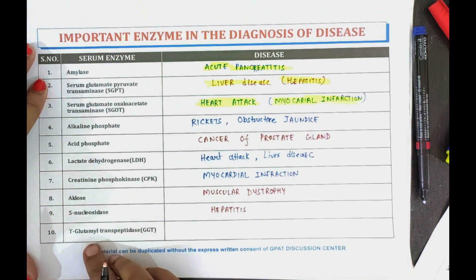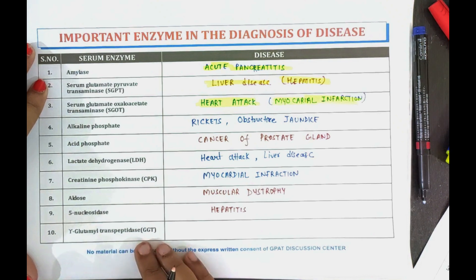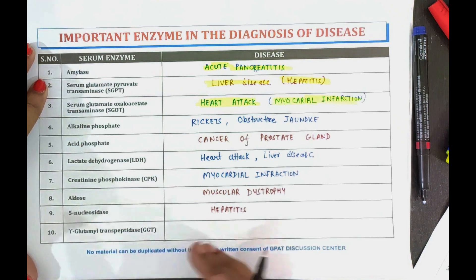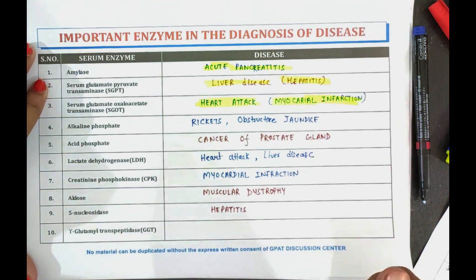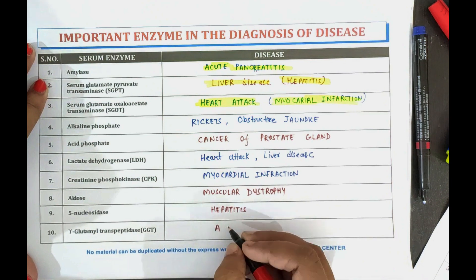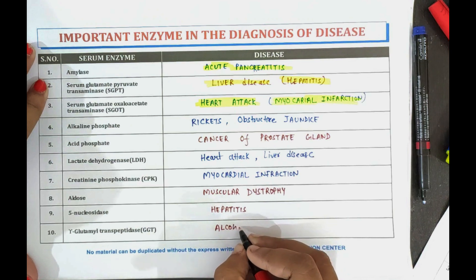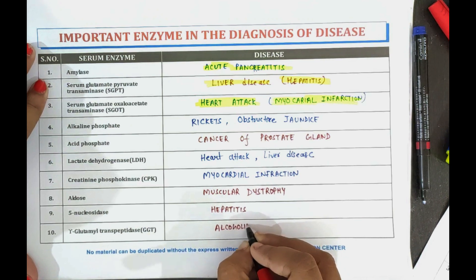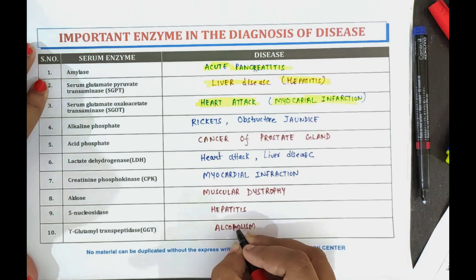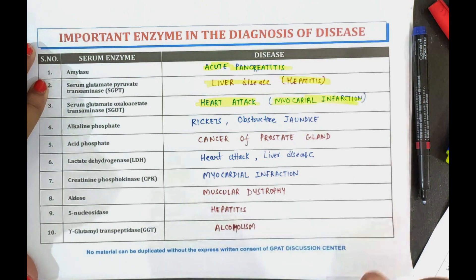Now coming towards the next one, gamma glutamyl transpeptidase, that is GGT. The GGT enzyme is used to detect alcoholism.